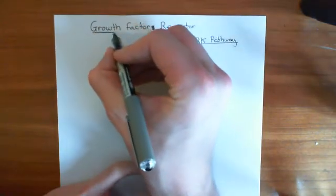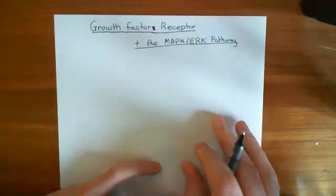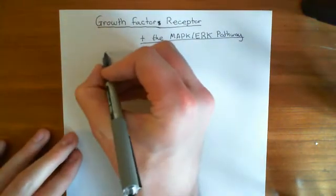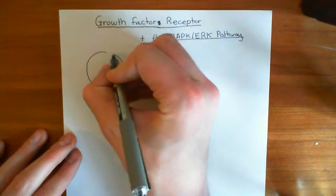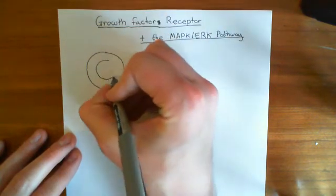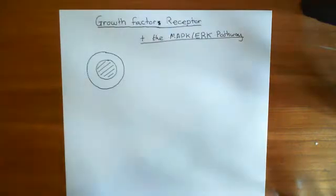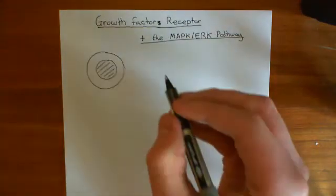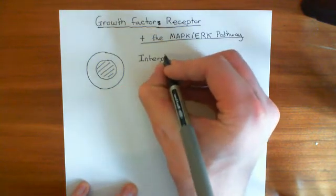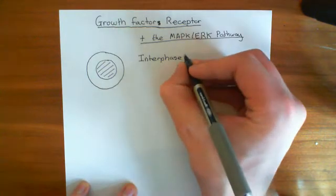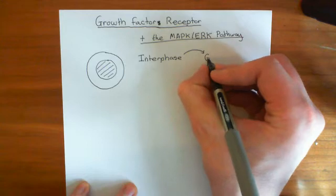Let's start with the motivating question. We have a cell which is sitting in the interphase of the cell cycle — it's not dividing at the moment. So we want to know: how do we actually induce this cell to leave the interphase and get it to go into the active part of the cell cycle, i.e. how do we tip it from interphase into the first growth phase?